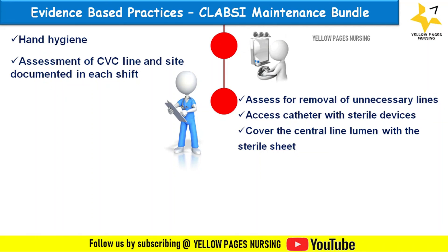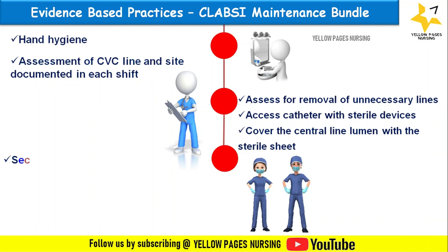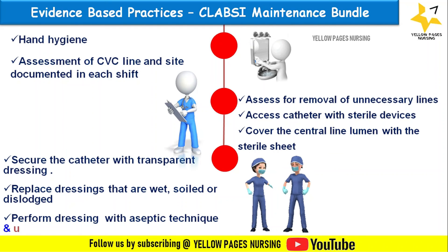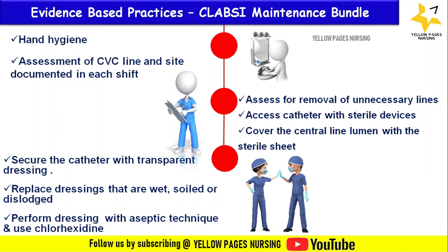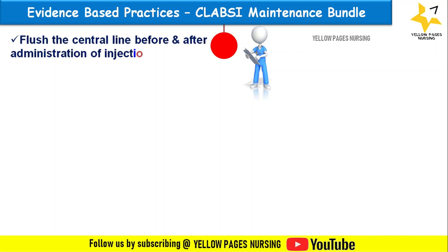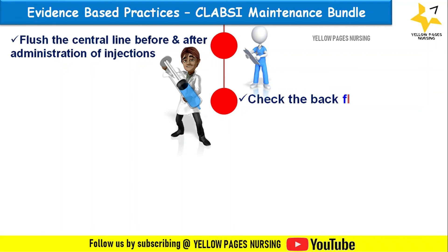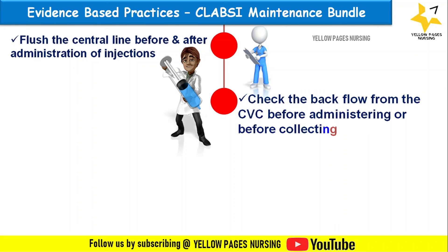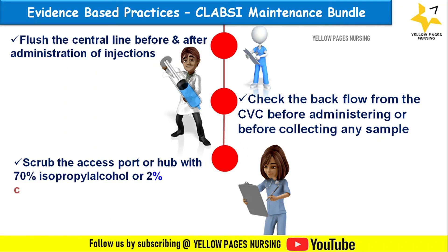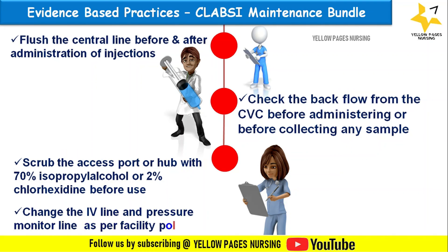Secure the catheter with transparent dressing and replace dressings that are wet, soiled, or dislodged. Perform dressing changes with aseptic technique using chlorhexidine. Flush the central line before and after administration of injections and check for backflow before collecting samples. Scrub the access port or hub with 70% isopropyl alcohol or 2% chlorhexidine before use. Change IV lines and pressure monitor lines as per facility policy.